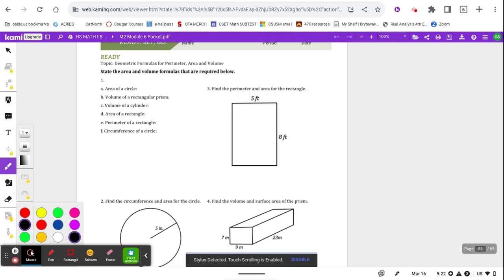But once you look them up, you should see that the area of a circle is pi r squared. The volume of a rectangular prism is length times width times height. The volume of a cylinder is pi r squared h.